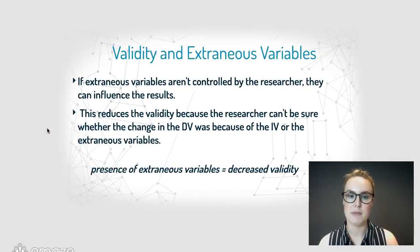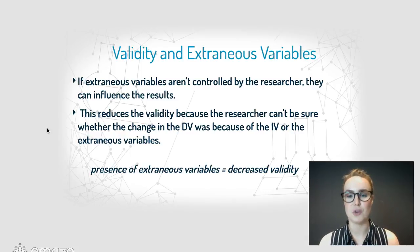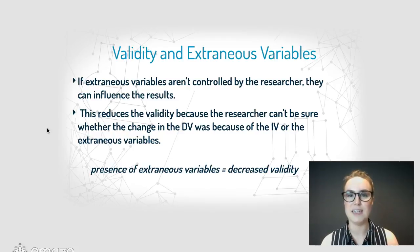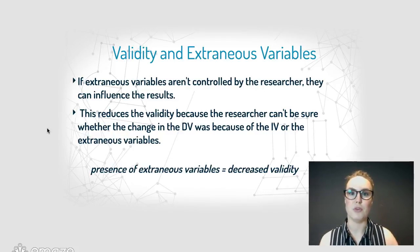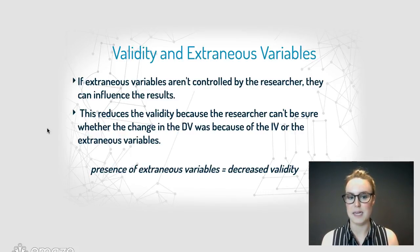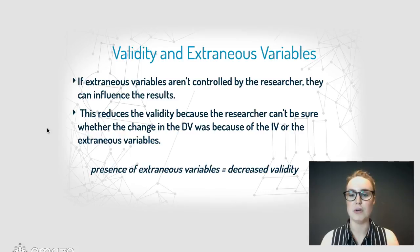Now, validity and extraneous variables. It's really important that if extraneous variables aren't controlled by the researcher in an experiment, they can influence the results, and this reduces the validity. If you've got all these extraneous variables, you don't know whether they've had an effect on your results or whether it was the independent variable. The presence of any extraneous variables means you're going to have decreased validity because you can't ensure that any change was because of the independent variable.